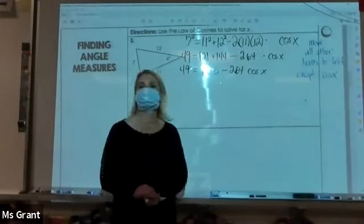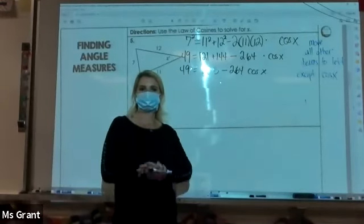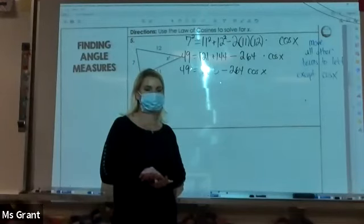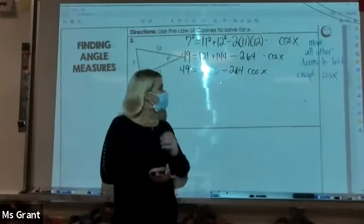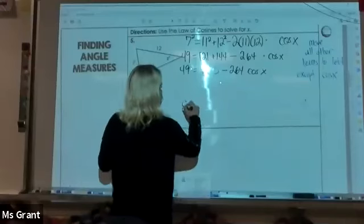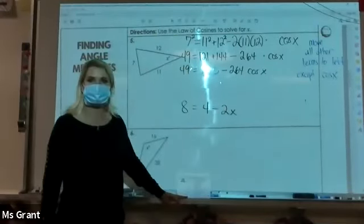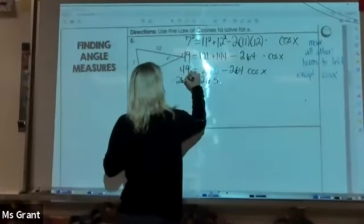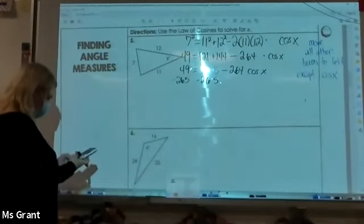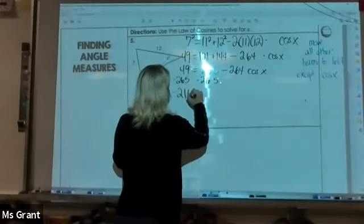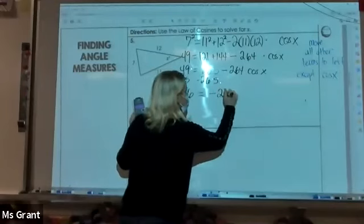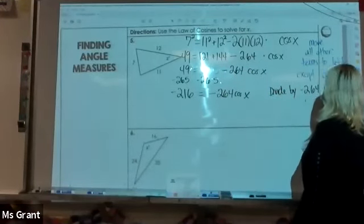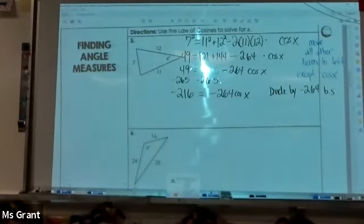Somebody tell me what I do next. We get to add the subtraction value. Let's pretend it was this: 8 = 4 - 2x. What are you going to do? We're going to move the 4 value, which means I move the 265. 49 - 265 = -216 = -264 cosine of x. Here's my rule: divide by -264 both sides.